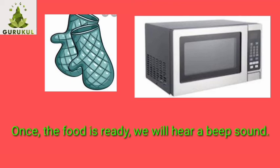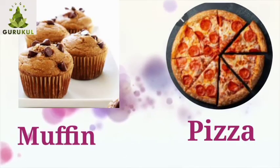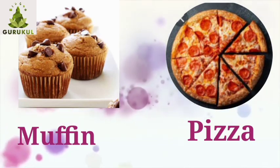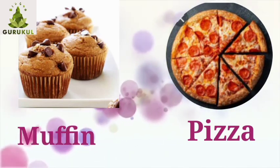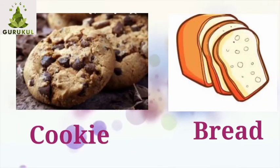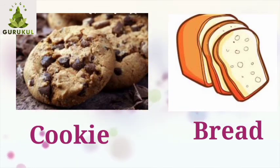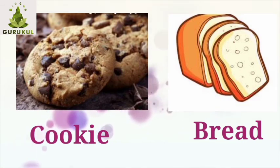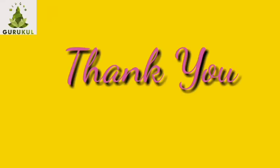Children, there are varieties of food which can be cooked in the oven. Let's see which ones they are. Muffin, pizza, cookie, and bread are some of the food items that can be cooked in the oven.